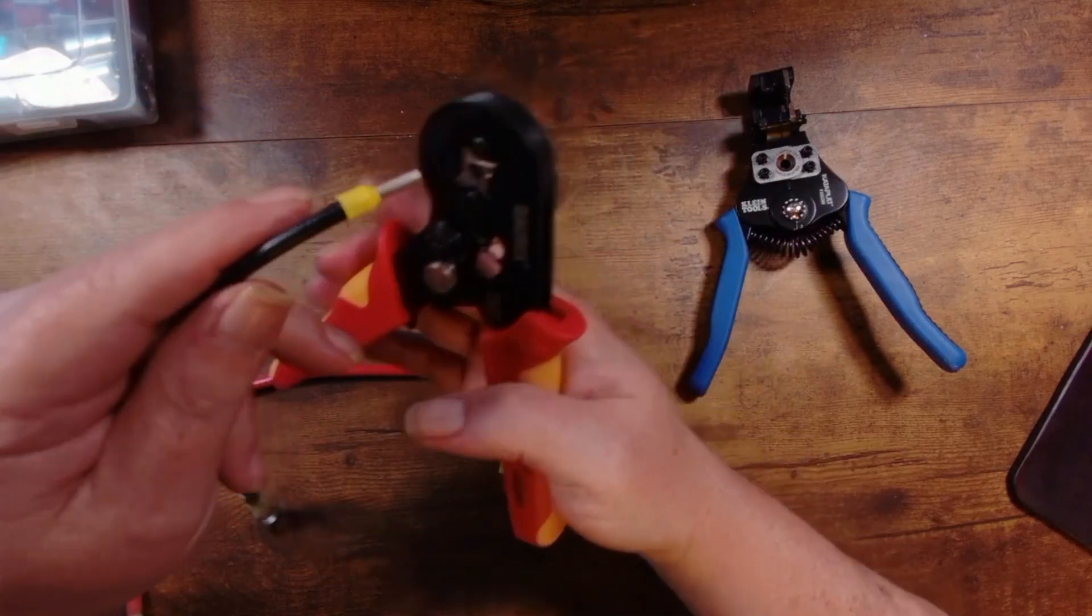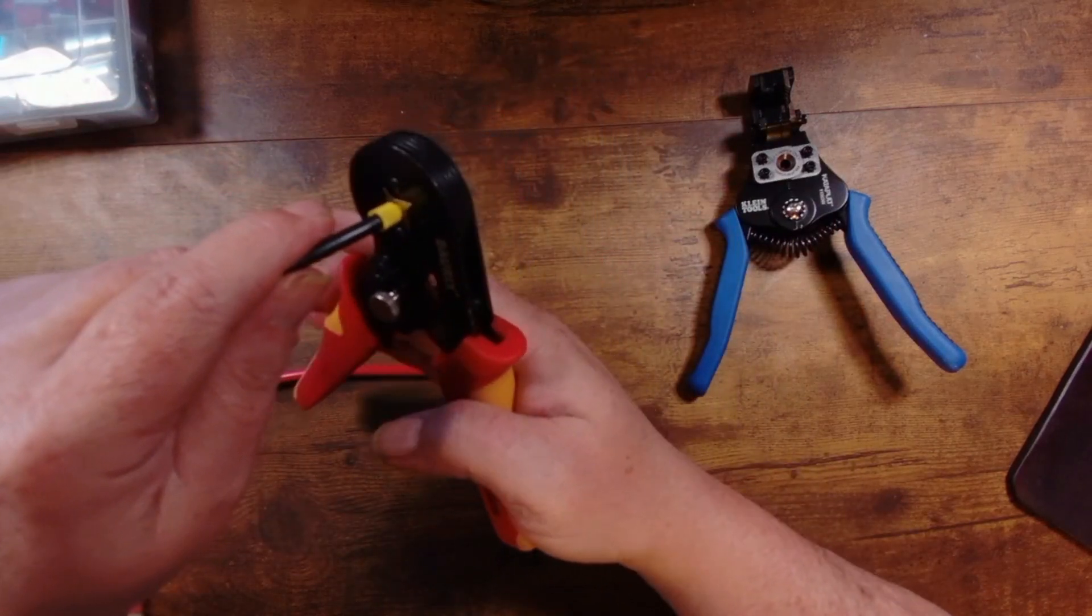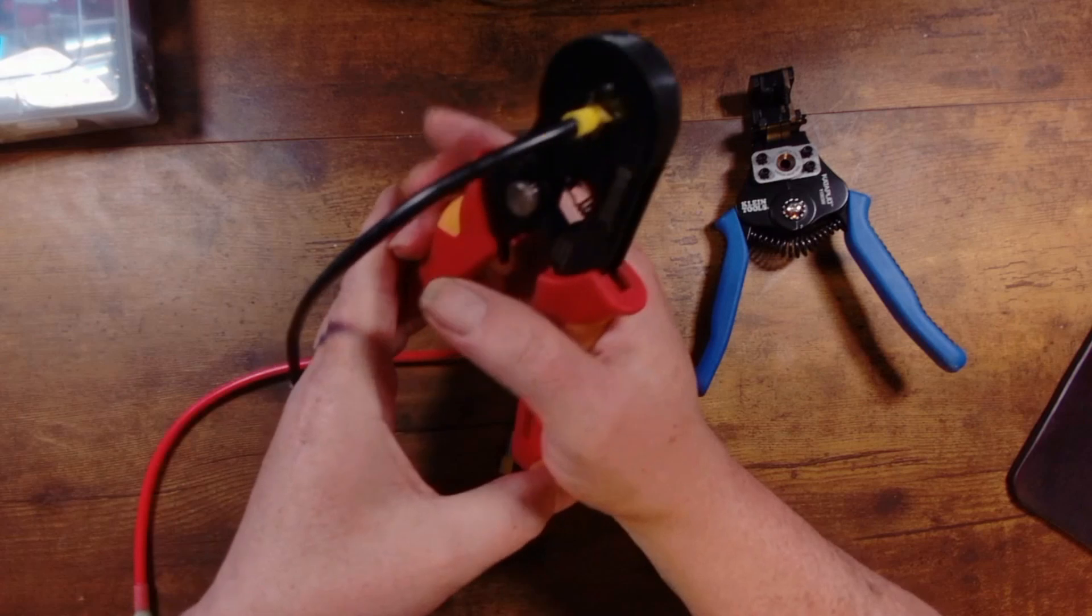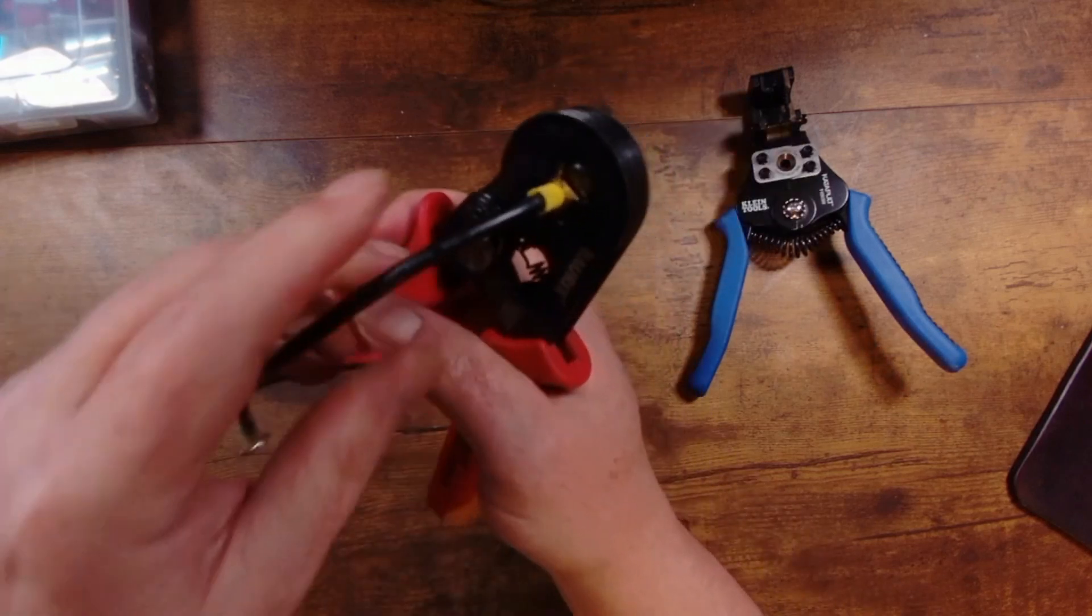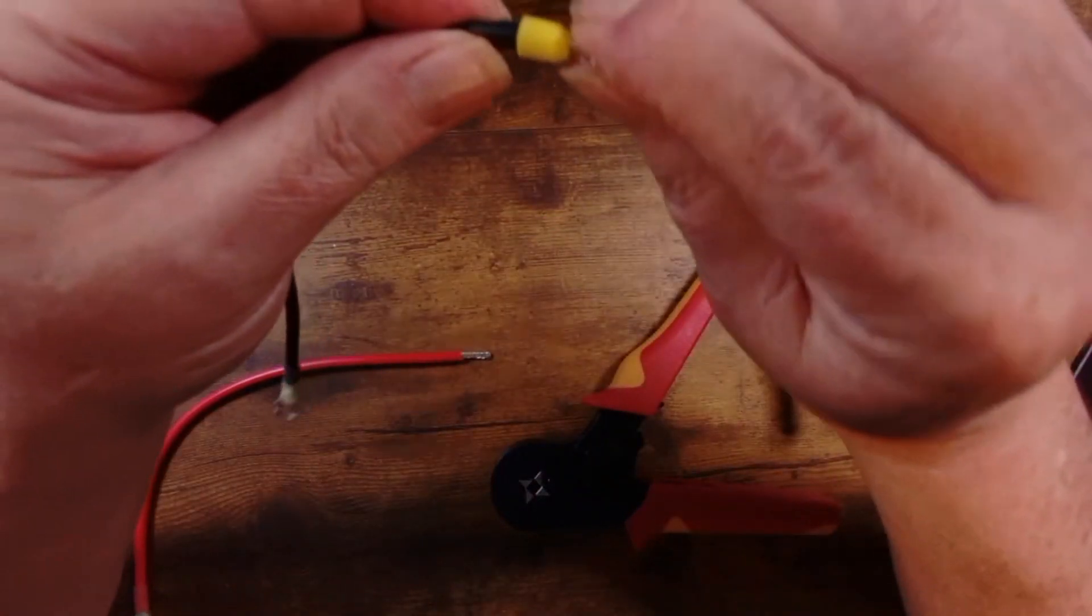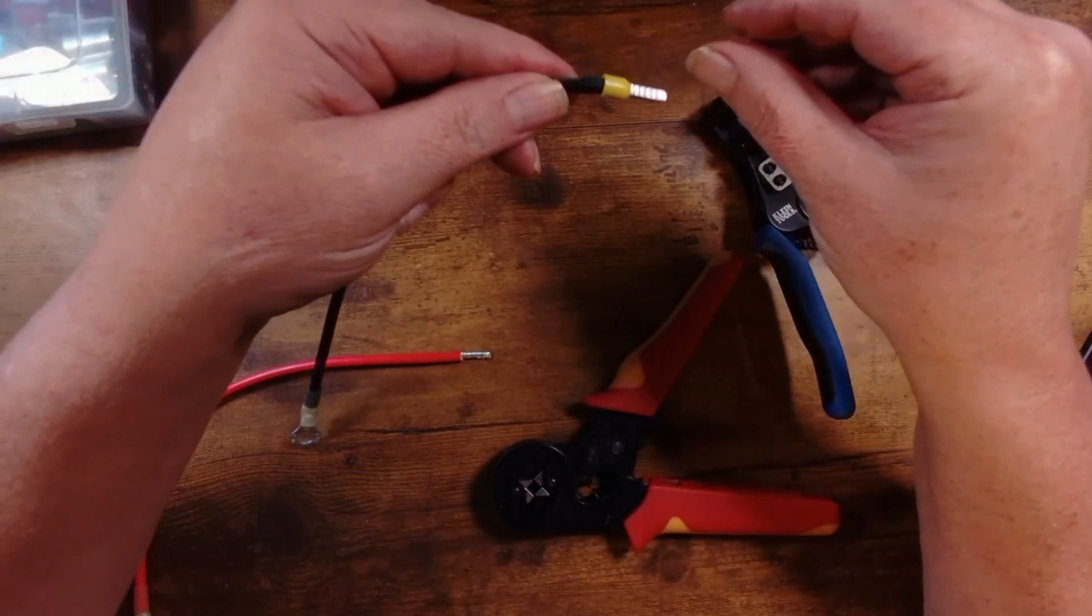You get your barrel crimper tool down in there, one swift motion, and you get a really nice crimped-on end there.